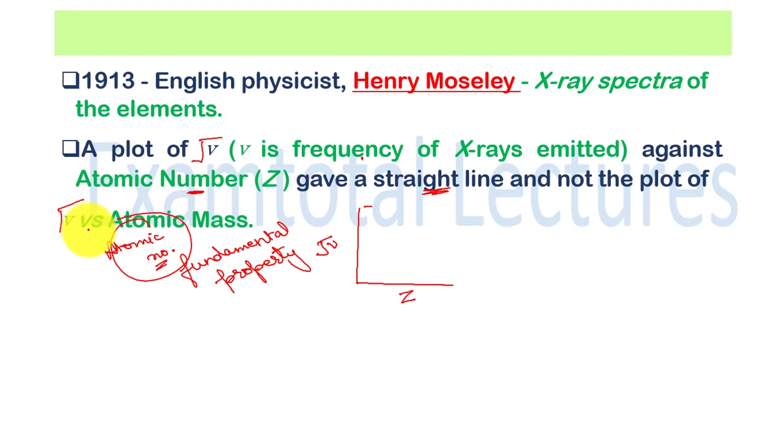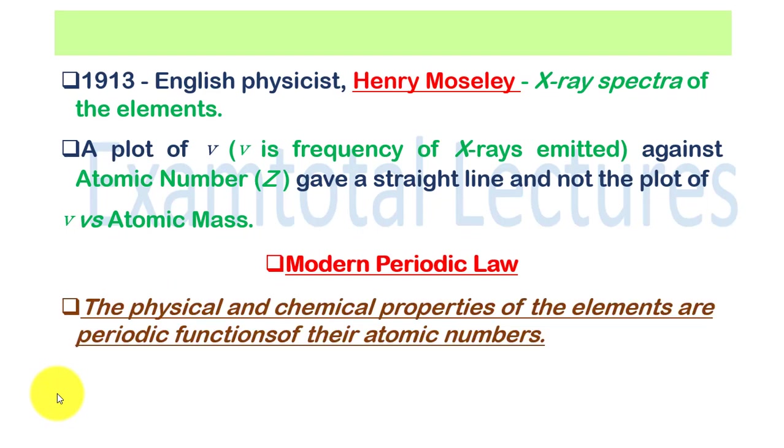This is the fundamental property against which we can see the trend of different elements' properties and how we can classify them. We should observe atomic number and classify elements accordingly. Atomic mass is not a fundamental property. With this came the modern periodic law. The statement is: the physical and chemical properties of elements are periodic functions of their atomic number.